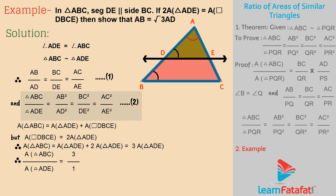Using equation 2, AB square divided by AD square is equal to 3 divided by 1. Therefore, AB is equal to root 3 into AD.